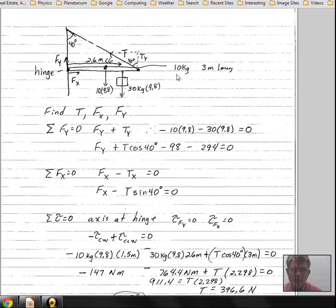The beam itself has a mass of 10 kilograms and is 3 meters long. We have an extra mass attached, 30 kilograms, and this is at 2.6 meters from the wall.